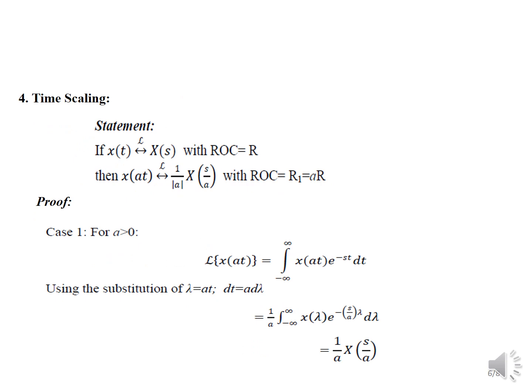Next: time scaling property. Statement — if the Laplace transform of X(t) is X(s) with ROC equal to R, then the Laplace transform of X(at) equals (1/|a|)·X(s/a) with ROC equal to R₁ = a·R. For the first case, a > 0: we evaluate the Laplace transform of X(at) as the integral from −∞ to ∞ of X(at)·e^(−st) dt. Taking the substitution λ = at, differentiating, converting all terms in λ, substituting into the equation, and taking the constant term outside, we obtain (1/a)·X(s/a).